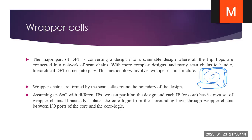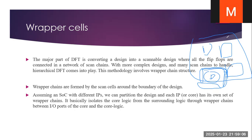Assuming an SOC with different IPs — we have an SOC with different IPs: one IP, another IP and another IP. We can partition the design and each IP core has its own set of vapor chains. It basically isolates the core logic from the surrounding logic through the vapor chains between the IO ports of the core and the core logic.